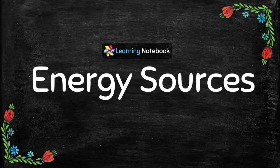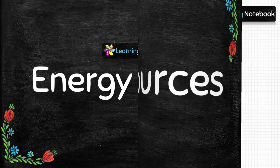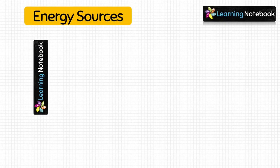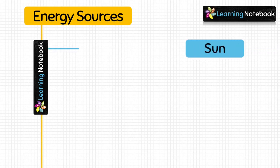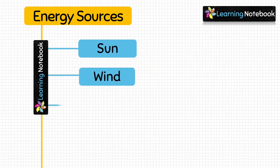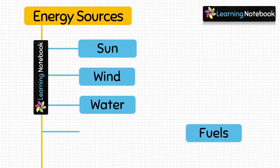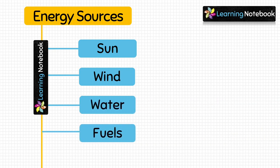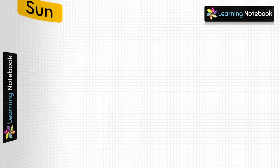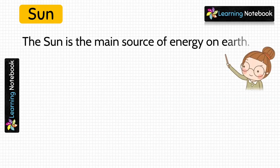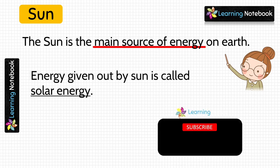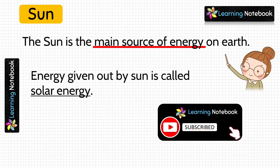We are going to learn about sources of energy. In this chapter we will learn four sources of energy: sun, wind, water, and fuels. The first source of energy is the sun — the sun is the main source of energy on our planet Earth, and the energy given out by the sun is called solar energy.